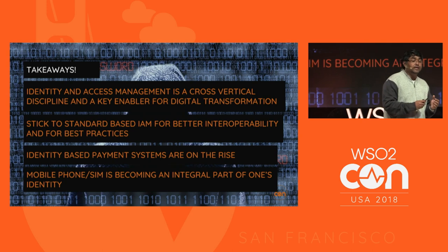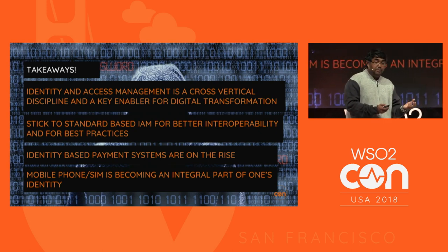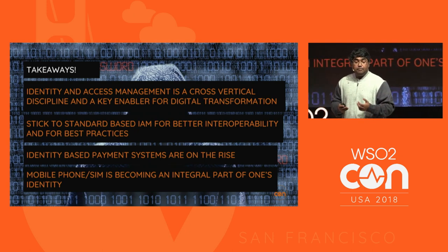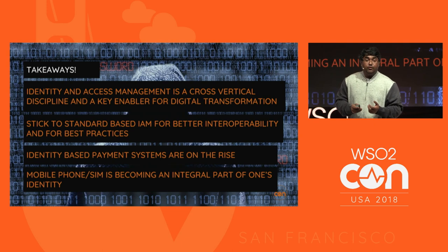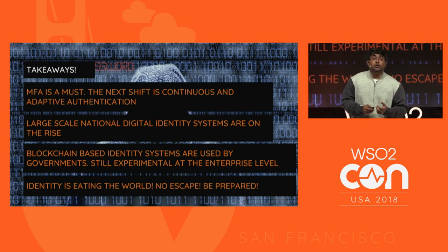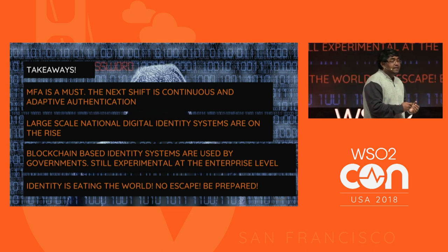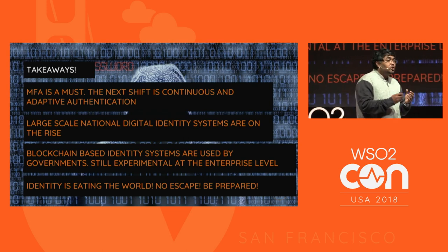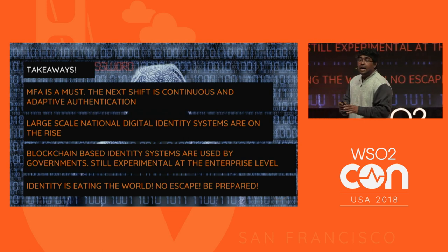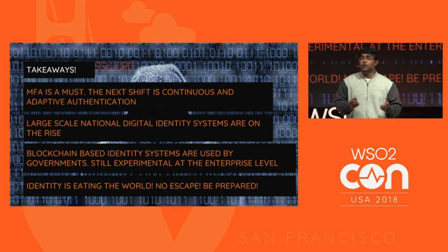Finally, the takeaways: Identity and access management is a cross-vertical discipline and a key enabler for digital transformation. We need to stick to standards-based IAM for better interoperability and best practices. Identity-based payment systems are on the rise. Mobile phones and SIMs are becoming an integral part of one's identity. Multi-factor authentication is a must, and the next phase is continuous and adaptive authentication. Large-scale national digital identity systems are on the rise. Blockchain-based identity systems are mostly used at the national level — enterprise-level use is still experimental. Identity is everywhere — no escape, be prepared.